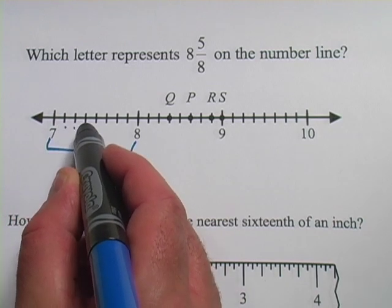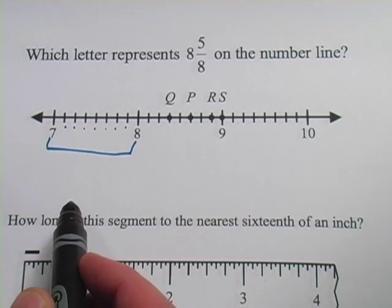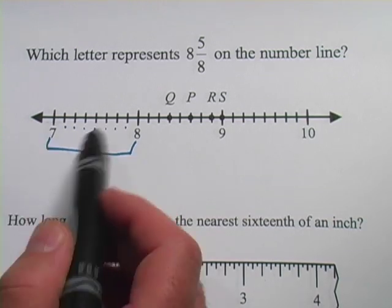1, 2, 3, 4, 5, 6, 7, 8. So these are being divided up into eighths. There are eight spaces in there.